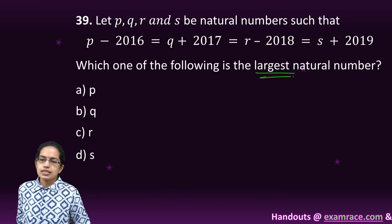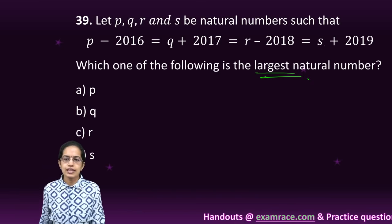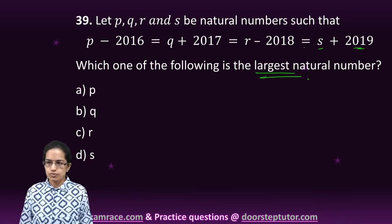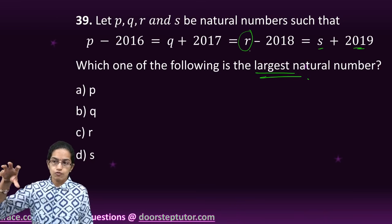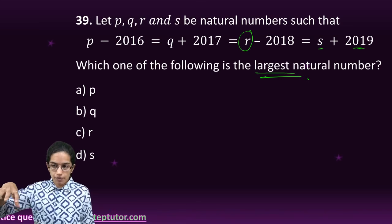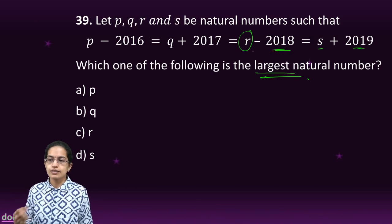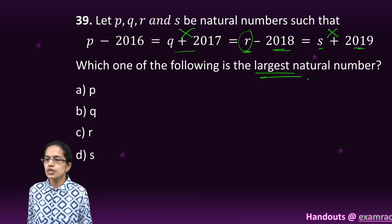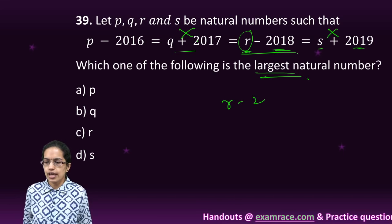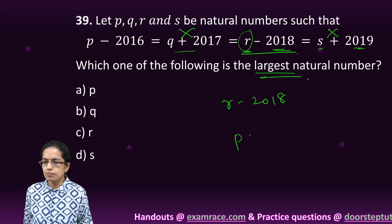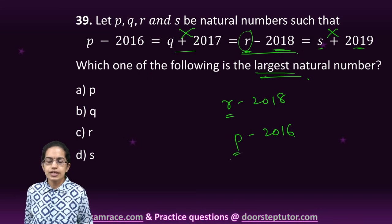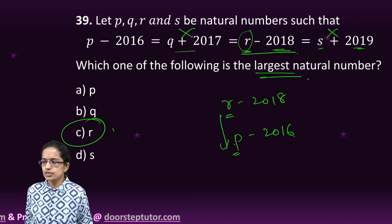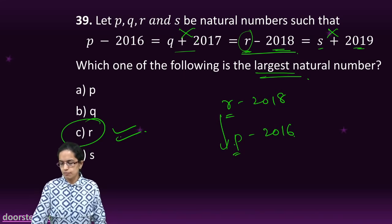Which of the following is the largest natural number? Now definitely if I am adding something to 209, this number would be small. But if I am subtracting from a bigger number 218, this would be a bigger number. This R minus 218 would be greater than P minus 216. So R would be greater than P obviously. So R would be the greatest number.